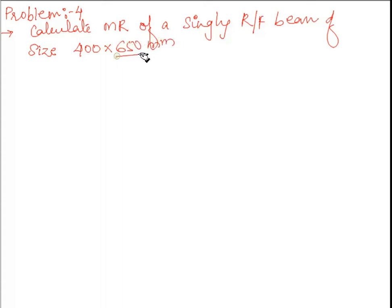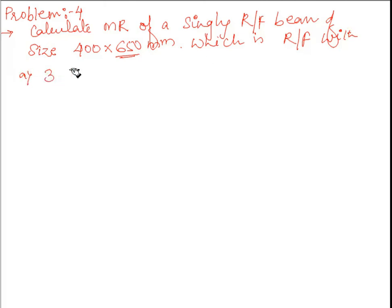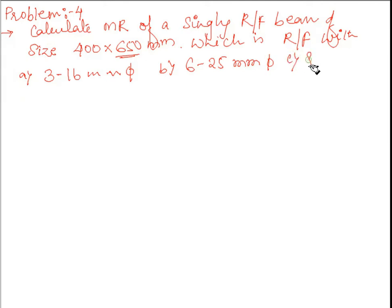This 650 mm is your total depth — overall depth. The beam is reinforced with three cases: Case A — three numbers of 16 mm diameter bars; Case B — six numbers of 25 mm diameter bars; and Case C — eight numbers of 25 mm diameter bars. Use Fe415 grade steel and M20 grade concrete.